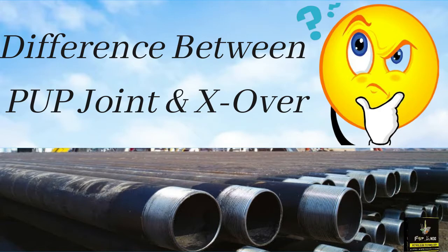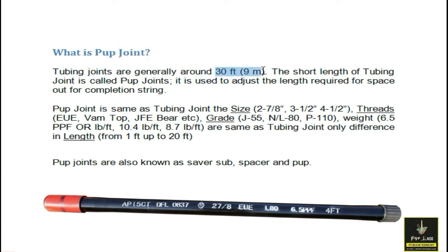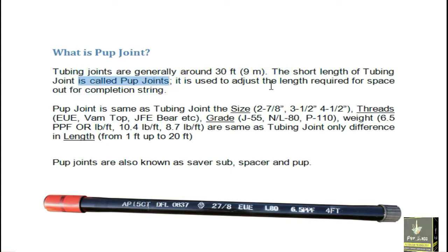Today I'm going to tell you the difference between pup joint and crossover in a very easy way. First we need to know what is a pup joint. Tubing joints are generally around 30 feet or 9 meters. The shorter length of the tubing joint is called a pup joint.